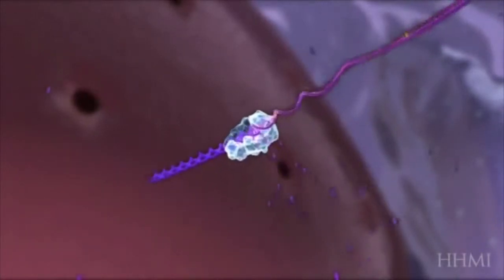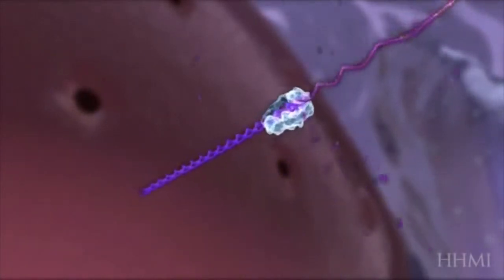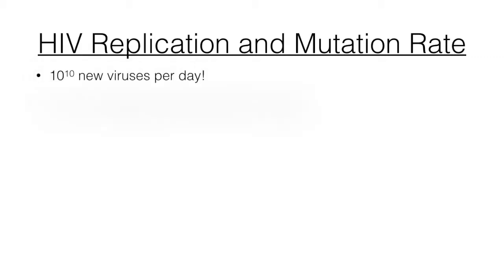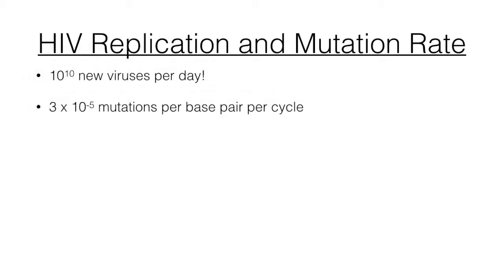This viral DNA is later incorporated into the genome by the separate protein integrase. HIV can produce 10 to the 10 viruses per day, and RT is very error-prone. Thus, HIV has a very high mutation rate of 3 times 10 to the negative 5 mutations per base pair each cycle.